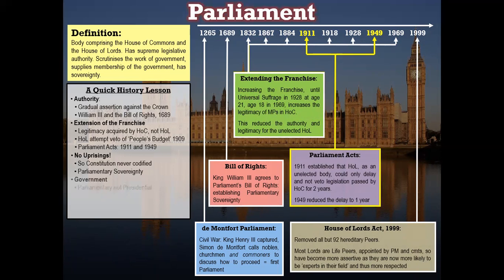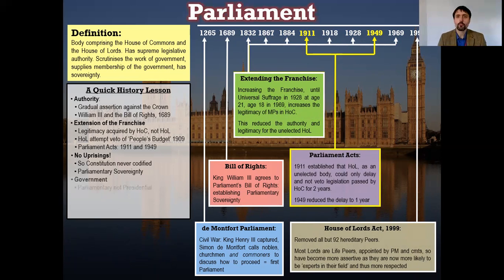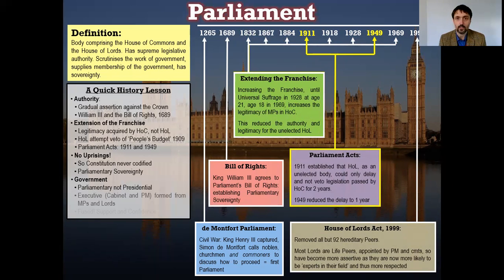So where does government come from? The form of government in this country is what we call parliamentary — Parliament is sovereign, Parliament gets its say, Parliament gets to choose what happens and what does not. They provide scrutiny, they provide the laws, they provide the impetus, they provide the vote. They are the be-all and end-all of our government in this country.